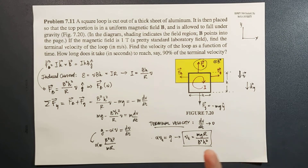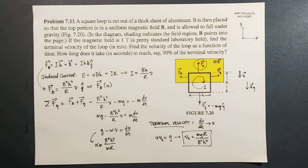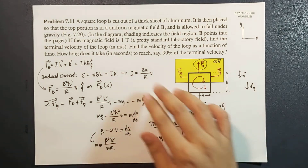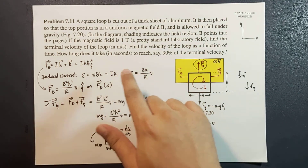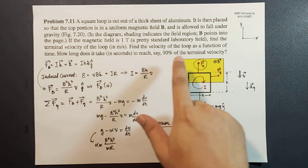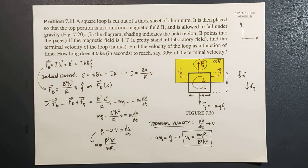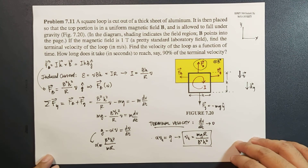In the problem set, I will give you some values to determine the terminal velocity — specifically the mass of the loop from the mass density of the aluminum, the cross-section, the side length, etc. In the next video, we'll find the time it takes in seconds to reach 90% of the terminal velocity. I hope you learned something today — see you in the continuation of this problem!